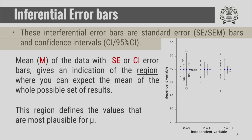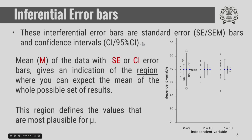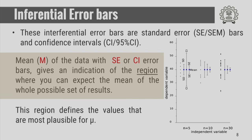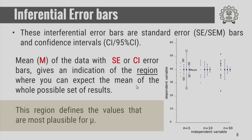The inferential error bars generally used are standard error, or standard error of the mean, denoted by SE or SEM, or confidence interval denoted by CI or 95% CI. The 95 percent confidence interval is the more commonly used confidence interval. The mean with a standard error or confidence interval error bar gives you an indication of the region where you expect the mean of the whole possible set of results to lie, and this region defines the values most plausible for mu, the true value of the quantity.